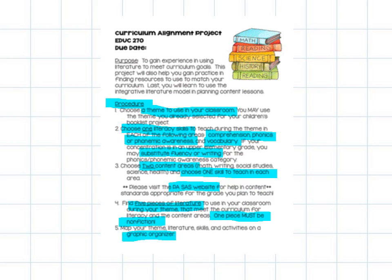And I do think a web works great. But whatever kind of graphic organizer, you can map out this unit. Within your map, you must include the name of your theme, the literature skills they're covering, and your content area skills, and an activity for each one.